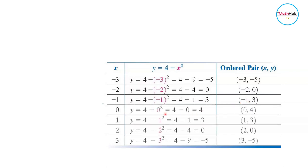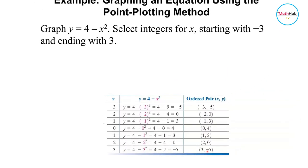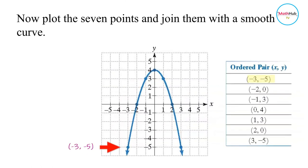That's the same thing you're going to do with the rest of the numbers, and these are the ordered pairs. Then if you plot all the points, all 7 points that you derived from the expression, and connect all these points with a smooth curve, this is how the graph of the expression would look like.